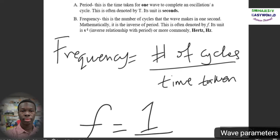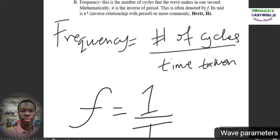Another thing is the frequency. The frequency is the number of cycles that the wave makes in one second, and it has a mathematical relationship. Frequency is the inverse of period. The unit of frequency is seconds to the negative one or more commonly hertz.